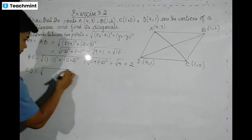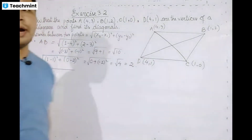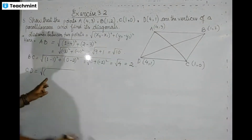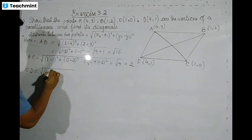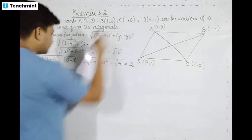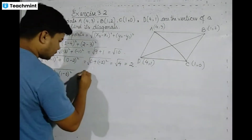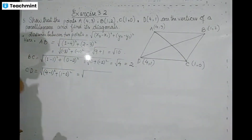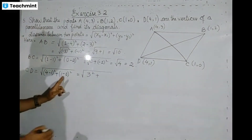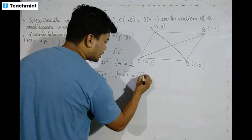Next we calculate CD. CD uses C coordinates (x1=1, y1=0) and D coordinates (x2=4, y2=1). So x2 minus x1 equals 4 minus 1, whole square, plus y2 minus y1 equals 1 minus 0, whole square. That gives 3 square plus 1 square equals 9 plus 1, which is root 10. So CD equals root 10.